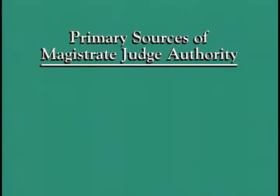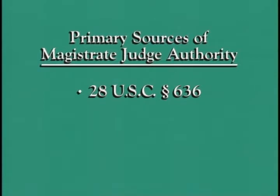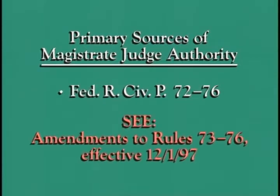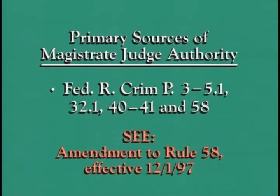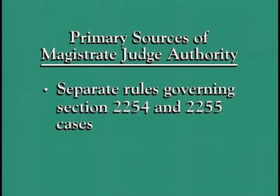I speak, of course, of United States Magistrate Judges. The primary sources of Magistrate Judge authority are 28 United States Code Section 636, Federal Rules of Civil Procedure 72–76, Federal Rules of Criminal Procedure 3–5.1, 32.1, 40–41, and 58, and the separate rules for Section 2254 and 2255 cases. It is convenient for discussion purposes to consider the authority of Magistrate Judges in two categories: Civil and Criminal.